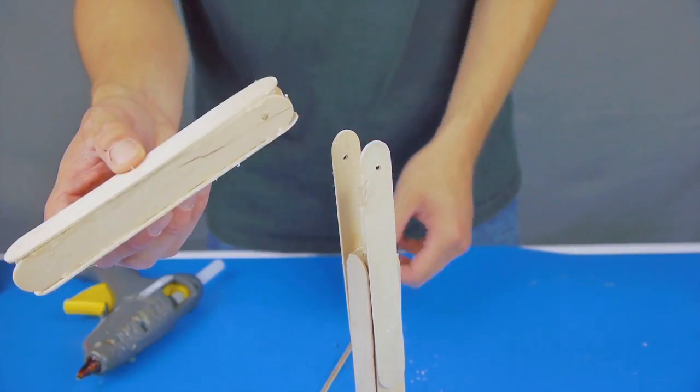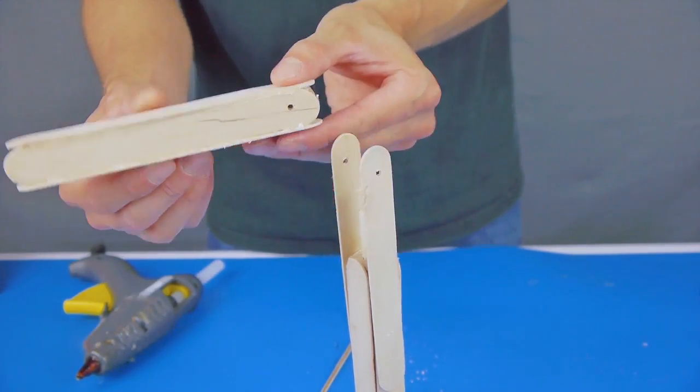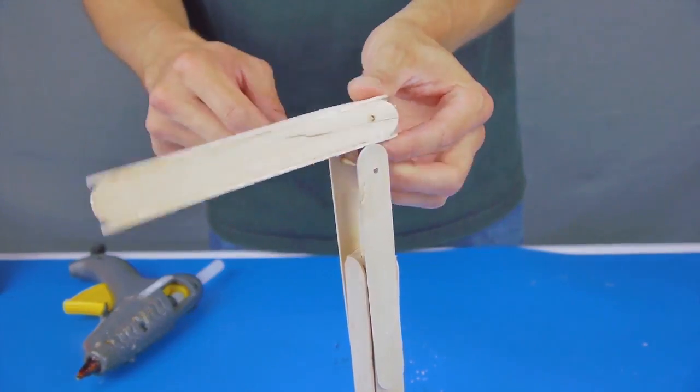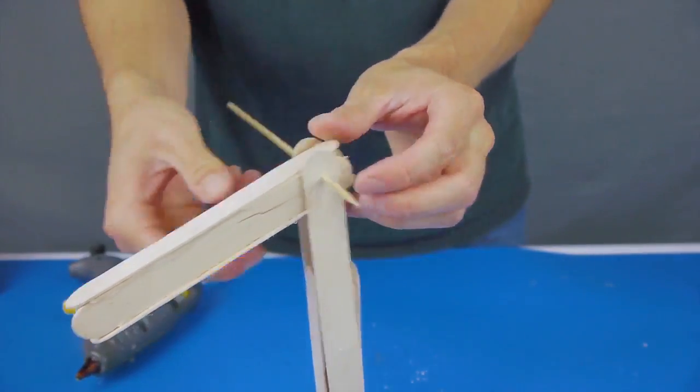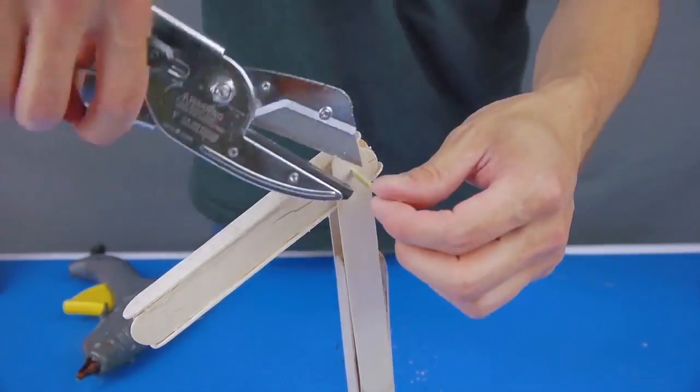The fighting arm stem is created by gluing four sticks together into a box shape using the two other sticks with holes. Insert a skewer through all four craft sticks to create a hinge for the fighting arm stem.